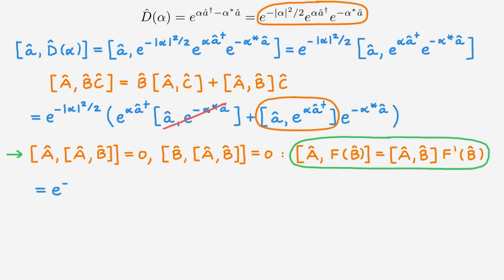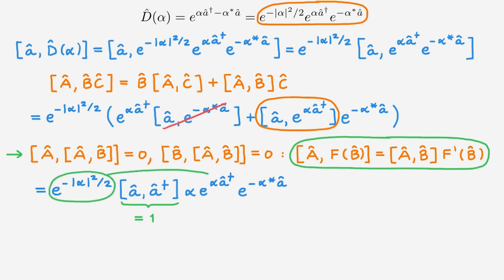Overall, we get the scalar exponential, then applying the result — where f is the exponential function — we get the commutator of A with A† times the derivative of the exponential, which is α times the exponential, and then the final exponential of the lowering operator. This commutator equals 1, and combining all terms we see they form simply the displacement operator. So the commutator of A with D(α) is equal to α D(α).